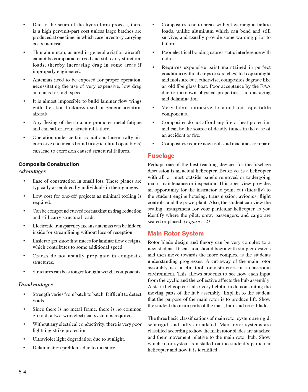Composite construction advantages: ease of construction in small lots. Low cost for one-off projects as minimal tooling is required. Can be compound curved for maximum drag reduction and still carry structural loads. Electronic transparency means antennas can be hidden inside for streamlining without loss of reception. Easier to get smooth surfaces for laminar flow designs, which contributes to some additional speed. Cracks do not usually propagate in composite structures. Structures can be stronger for lightweight components. Disadvantages: strength varies from batch to batch. Difficult to detect voids. Since there is no metal frame, there is no common ground; a two-wire electrical system is required. Without any electrical conductivity, there is very poor lightning strike protection. Ultraviolet light degradation due to sunlight. Delamination problems due to moisture.